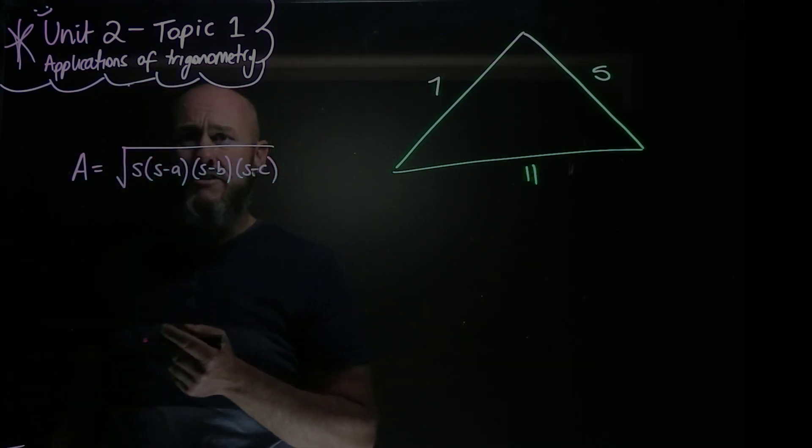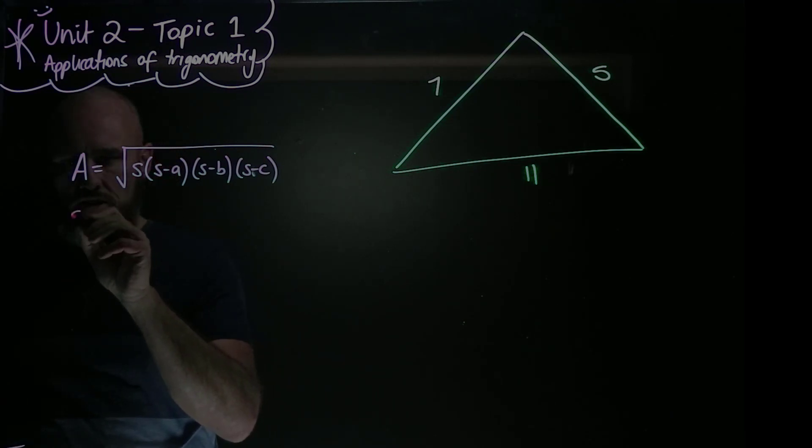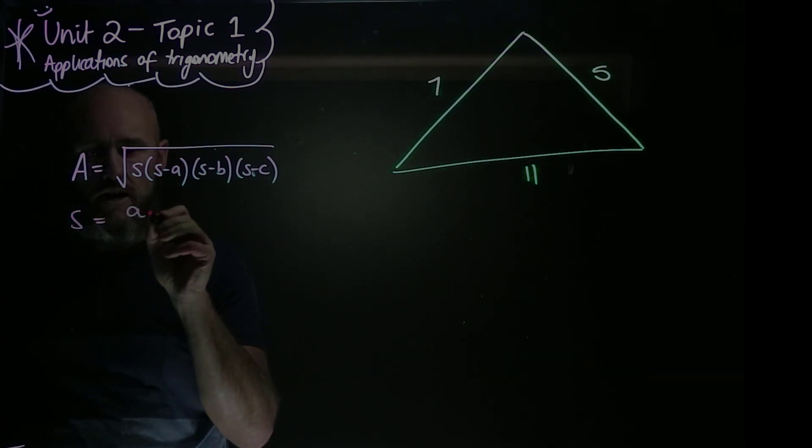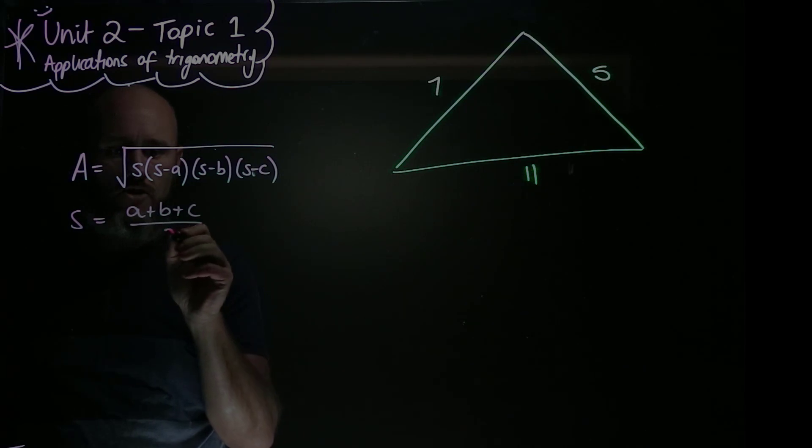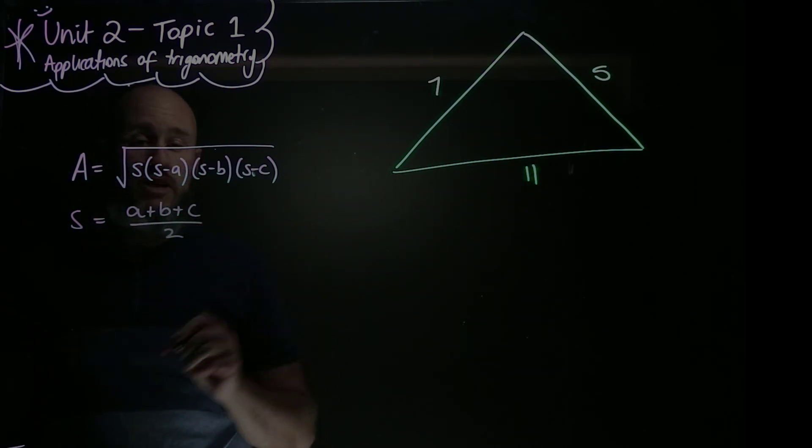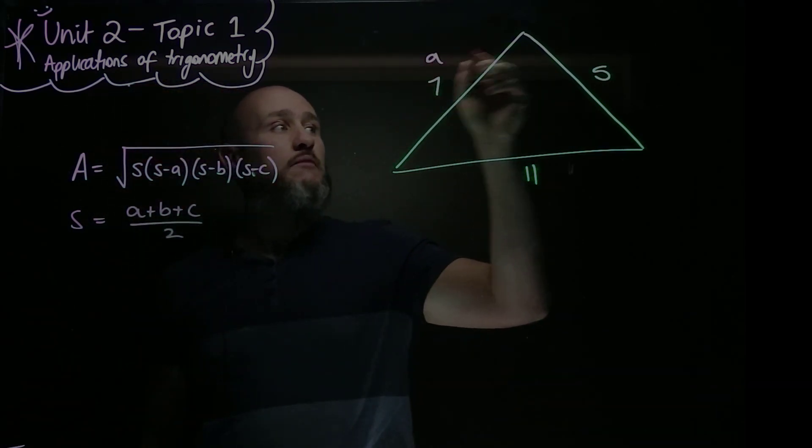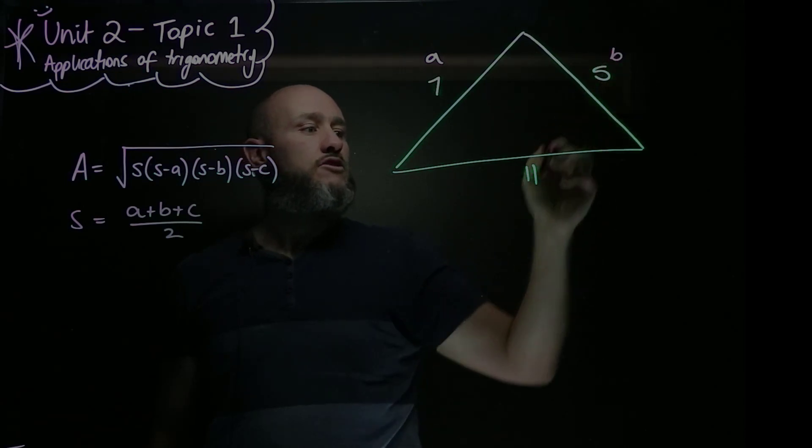And what's A, B, and C, and S? Well, I'll tell you what S is. S is equal to A plus B plus C over 2. And I'll tell you what A and B and C are. A and B and C are side lengths.